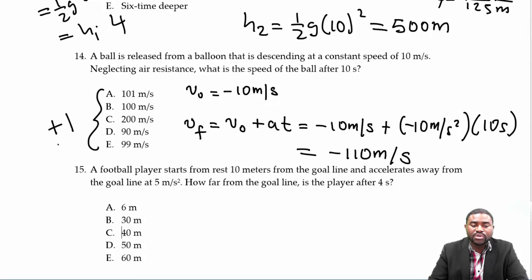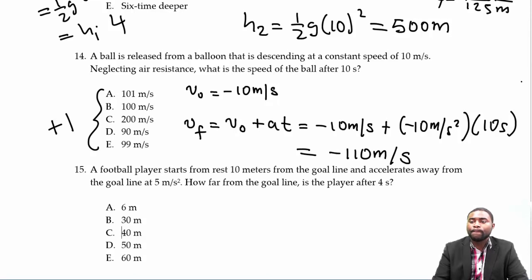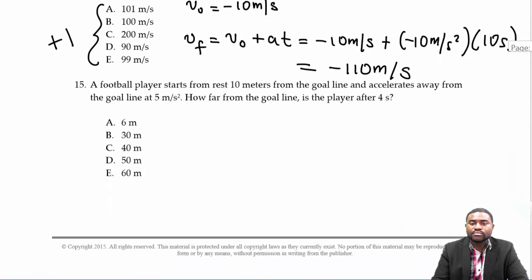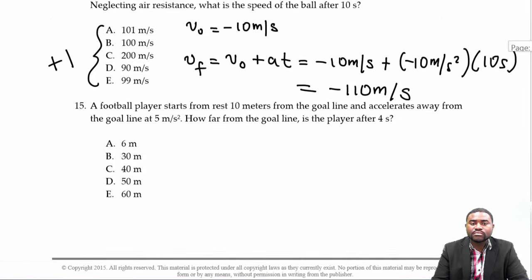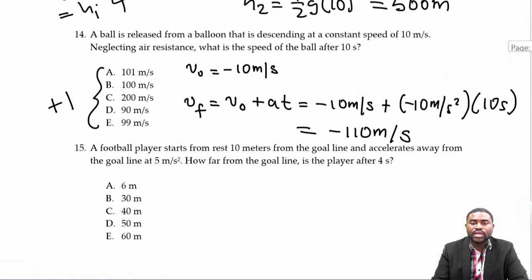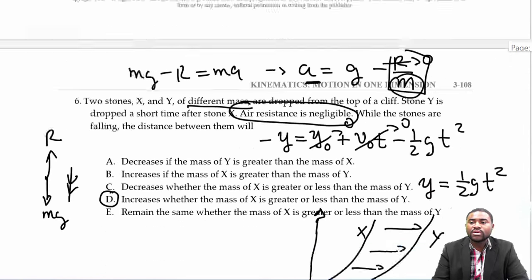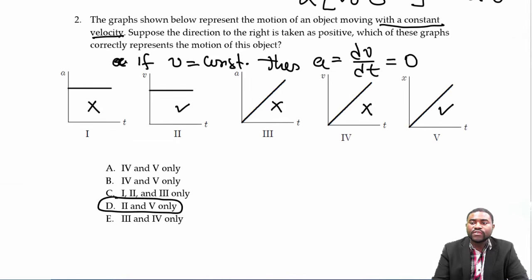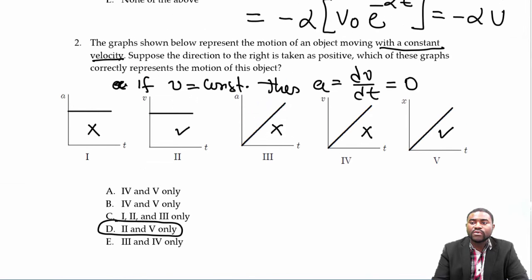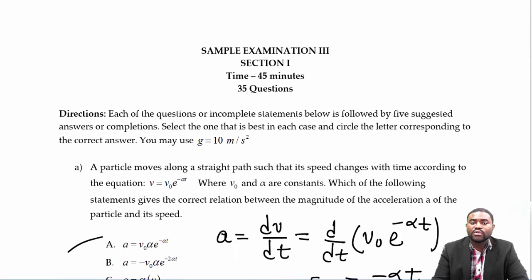A student asks whether to use 10 or 9.8 for gravity on the test. The instructor confirms it is defined in the question packet — at the top of the question packet it says to use g equals 10. It's always good to check the instructions, which may vary from year to year.